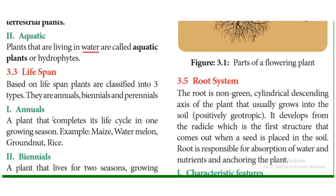Next is lifespan — how long a plant lives. Plants are classified into three types based on lifespan: annuals, biennials, and perennials. Annuals are plants that complete their life cycle in one growing season. Examples include maize, watermelon, groundnut, and rice.